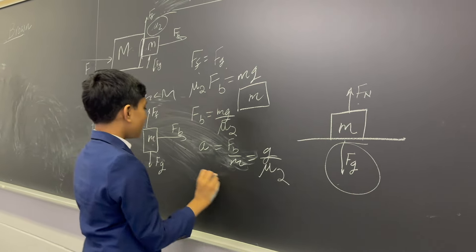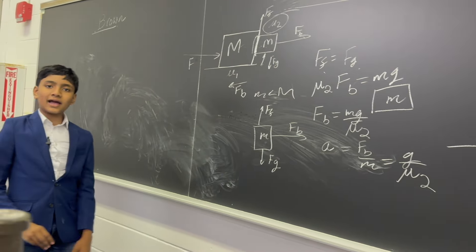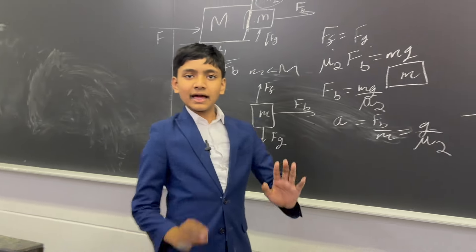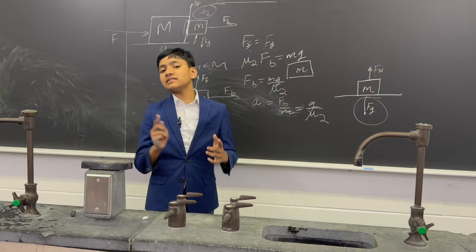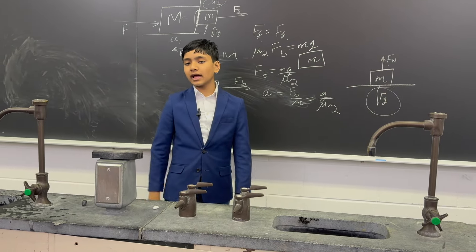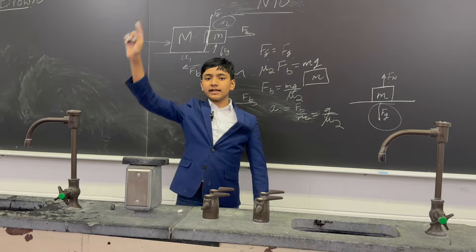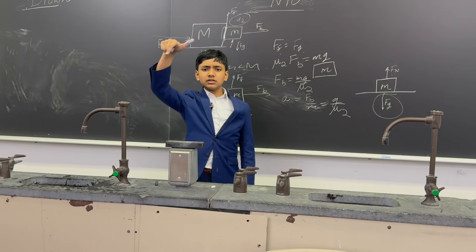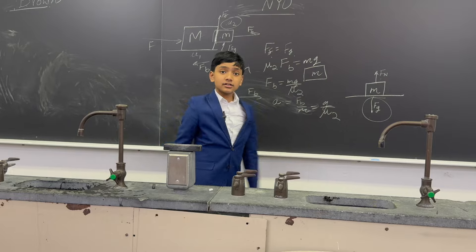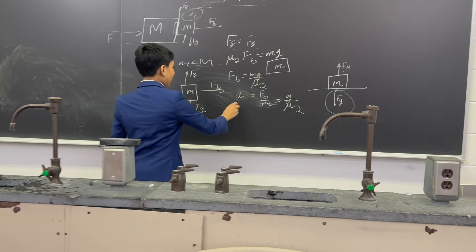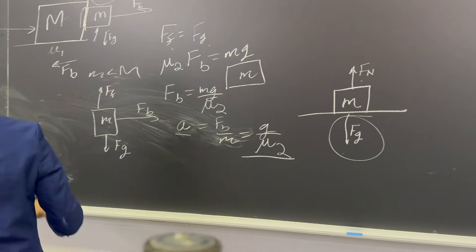So a is just f-block over m, which is g over mu two. Now if the acceleration of the big mass and the small mass were not the same, they would just separate from one another. That would mean there's no force of friction to keep the small mass up and it'll just drop to the ground — catastrophic. So the acceleration of the small one has to be the same as the big one.